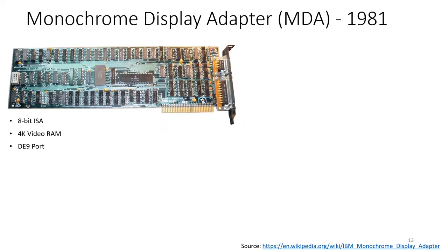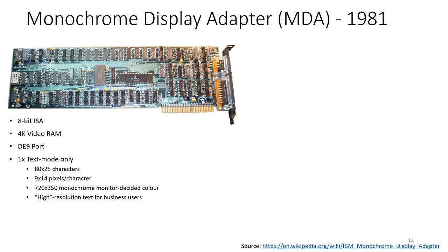Now let's move to another standard called Monochrome Display Adapter, MDA. It came out at exactly the same time as CGA. The MDA is actually meant only for text - the computer cannot tell this graphics card to display graphics. It can only say display this character at this position. At the character and pixel ratio, when you multiply those values you get a resolution of 720 by 350, but the computer cannot control each individual pixel. The purpose was high-resolution text for business users who didn't need graphics.